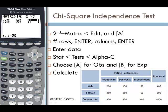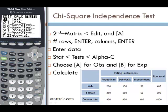Once the matrix is filled out, we'll go to the test. So stat and scroll twice to the right until you get to tests. Our chi-squared test is option C.